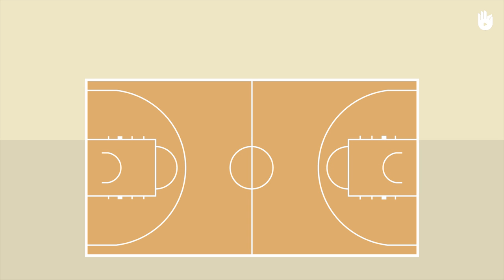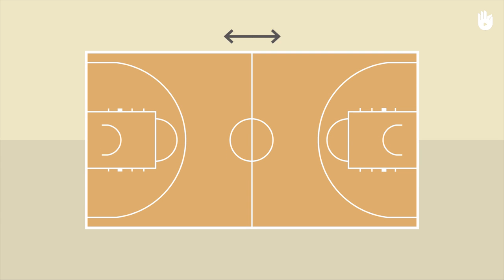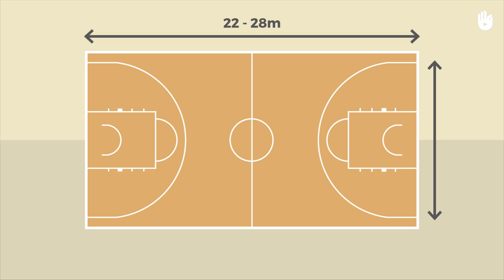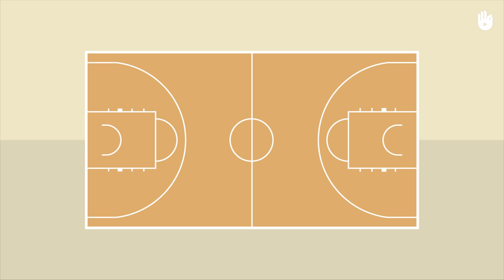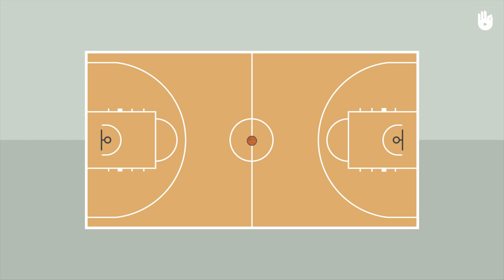In this video, you will learn the basic rules of basketball. Basketball is played on a rectangular court, which is 22 to 28 meters long and 13 to 15 meters wide. At each end of the court, there is a 45 centimeter wide hoop fixed on a panel suspended 3.05 meters above the ground — the basket.